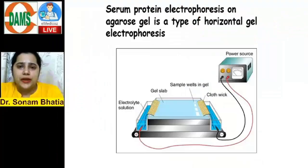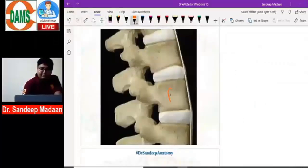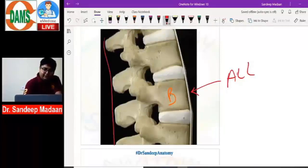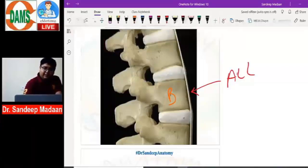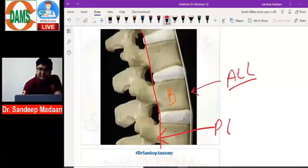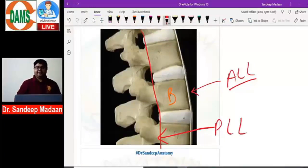Anterior to the vertebral body we have the anterior longitudinal ligament. The posterior longitudinal ligament cannot be drawn at the spinous process level — that would be the supraspinous ligament. The posterior longitudinal ligament is drawn behind the body. So: anterior longitudinal ligament is anterior to the body, and posterior longitudinal ligament is behind the body.